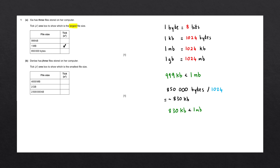Denise has three files stored on a computer. Tick one box to show which is the smallest file size. In this case, we have megabytes, gigabytes, and kilobytes. Let's compare these all to gigabytes, as that is the largest unit. The first one we have is 4000 megabytes.